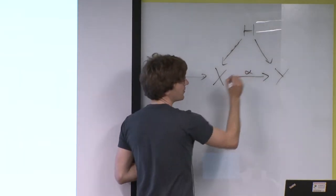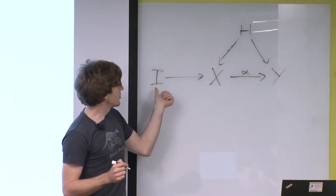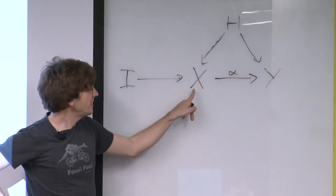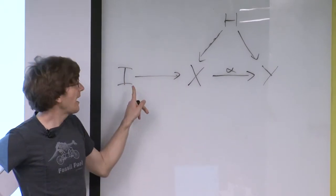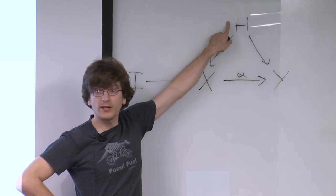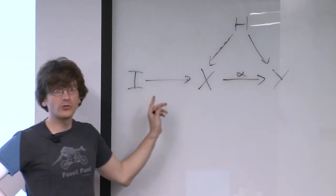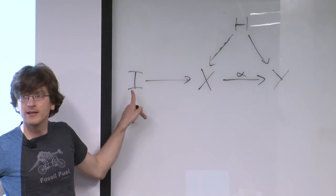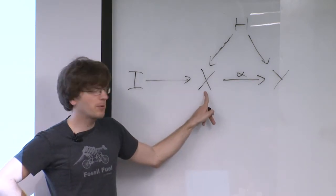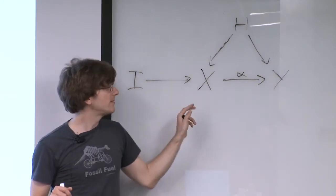We're interested in this coefficient alpha. We cannot just regress y on x because h messes things up. If you think about smoking and lung cancer, you want a variable causally influencing whether you smoke but not affecting the hidden variables - like genetic or socioeconomic status - and also not causing lung cancer directly. In the smoking example, people have looked at the tax on tobacco: high tobacco taxes make people smoke less, but the tax doesn't directly affect whether you get lung cancer - it only affects it via whether you smoke.